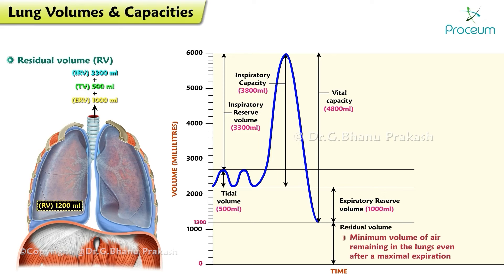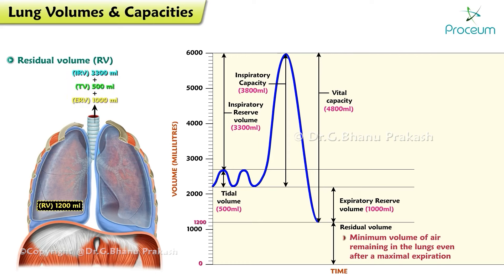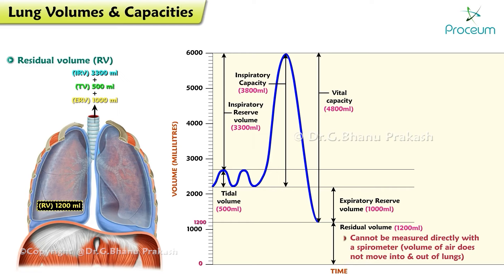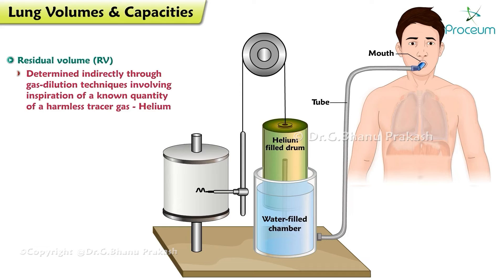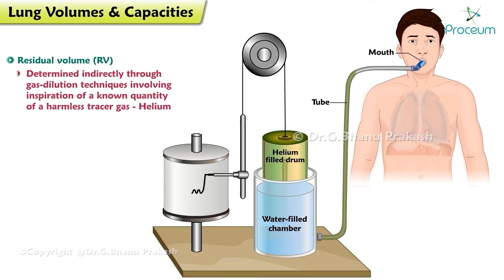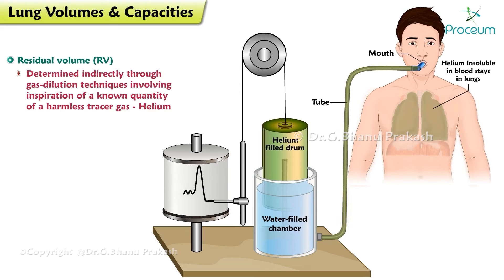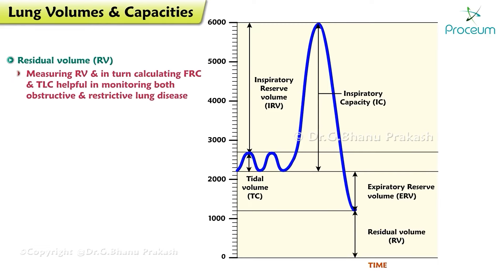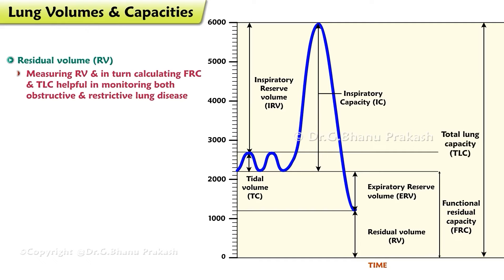Residual volume: the minimal volume of air remaining in the lungs even after a maximal expiration. Average value of residual volume is 1,200 milliliters. Residual volume cannot be measured directly with a spirometer because this volume of air does not move into and out of the lungs. It can be determined indirectly through gas dilution techniques involving inspiration of a known quantity of harmless tracer gas such as helium. Measuring residual volume and in turn calculating functional residual capacity and total lung capacity can be helpful in monitoring obstructive and restrictive lung disease.